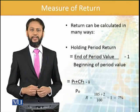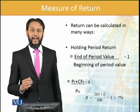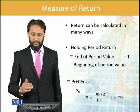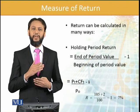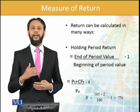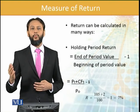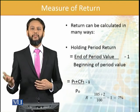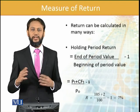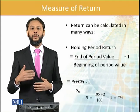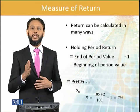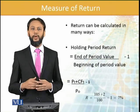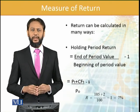We take the end period value divided by the beginning period value — that is, the level at which we made entry and then at what level the investment goes to. It could be positive, it could be negative. It is not always necessary that investment will go up; investment can also fall many times. Subtracting one will give you the return.